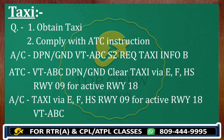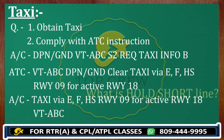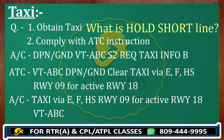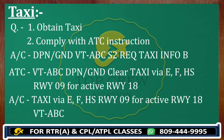For example, taxi via Echo Fox Road — you are going to start your taxi, go first on Echo, then on Fox Road. After that you have to hold short of Runway 09er. We have already discussed what a hold short line is — you can click the link above to see that video. You cannot cross the hold short line, so you have to take permission from ATC to cross the active runway.